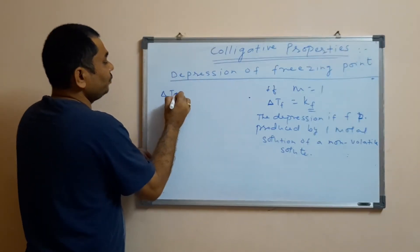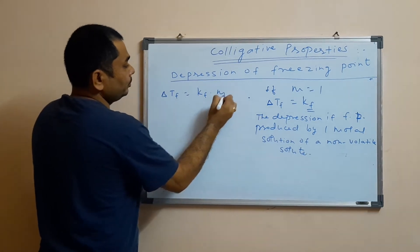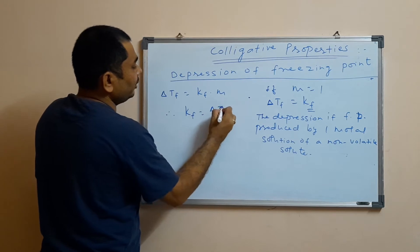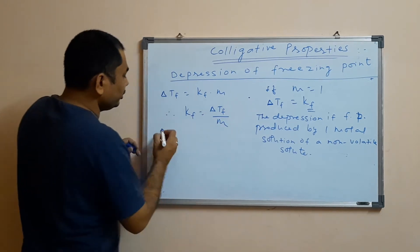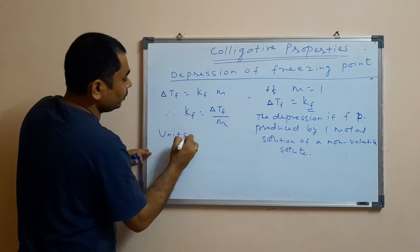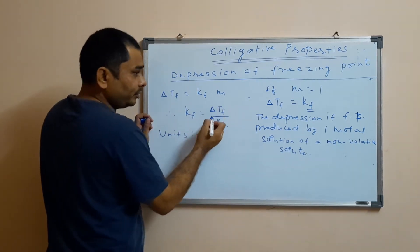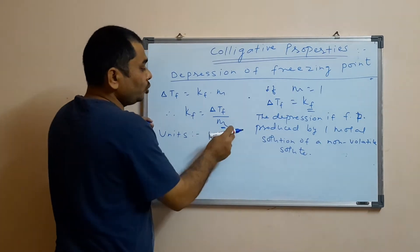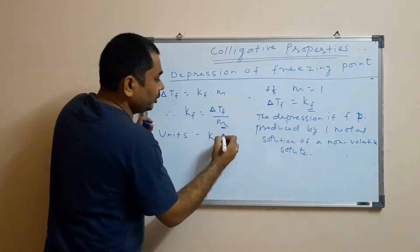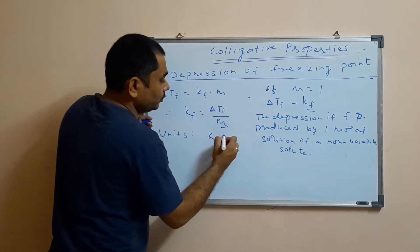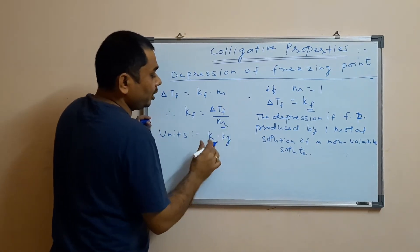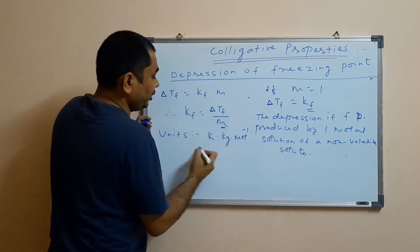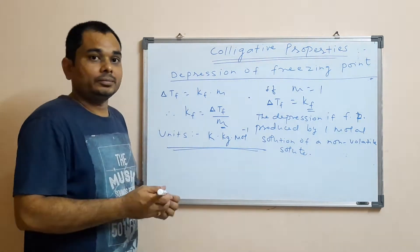Since ΔTf = Kf × m, therefore Kf = ΔTf / m. The units of Kf: ΔTf is a change in temperature, so it is Kelvin; molality has units of moles per kilogram. Therefore, the unit of Kf is Kelvin·kilogram per mole (K·kg/mol). This is the unit of the cryoscopic constant.